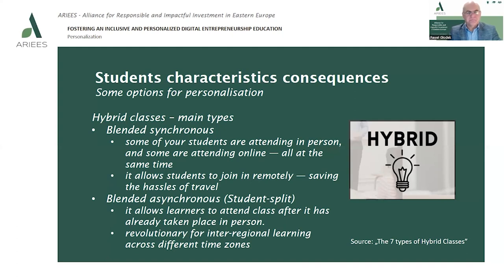The first type is called blended synchronous. It is about synchronous education where some students attend an in-person class and some attend online, but all at the same time. It allows students to join remotely, saving travel time. This is especially important when the distance between students and the school where the course takes place is large.